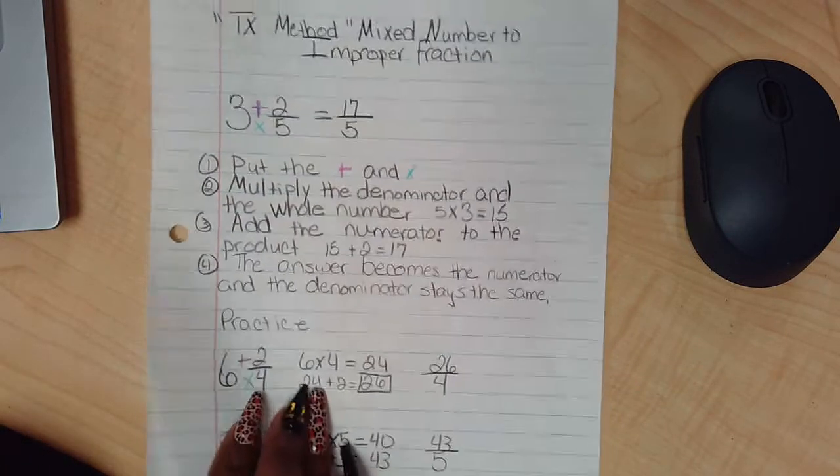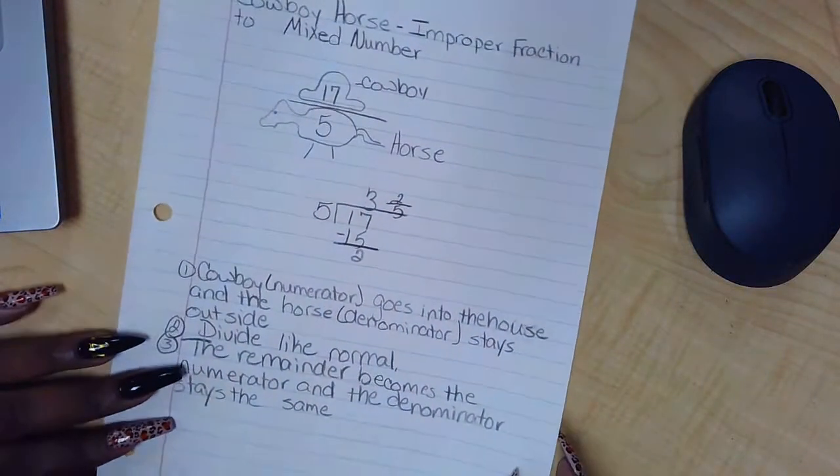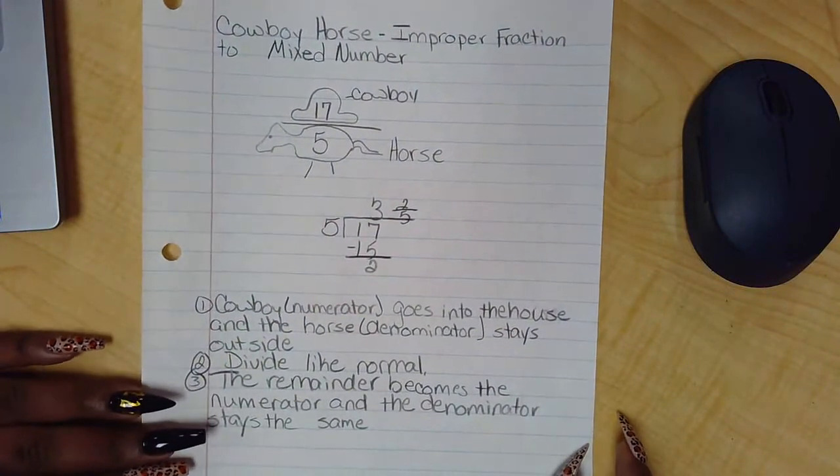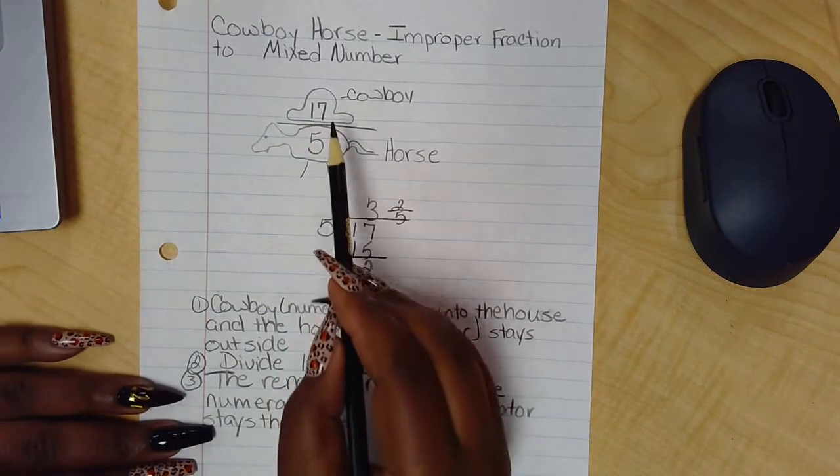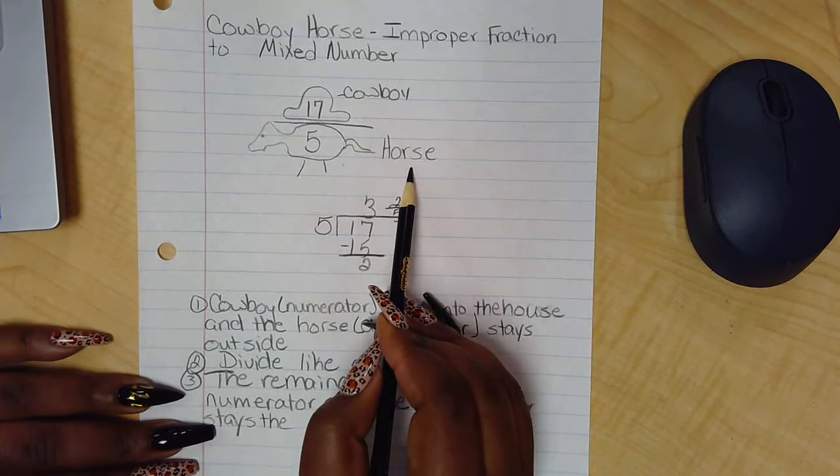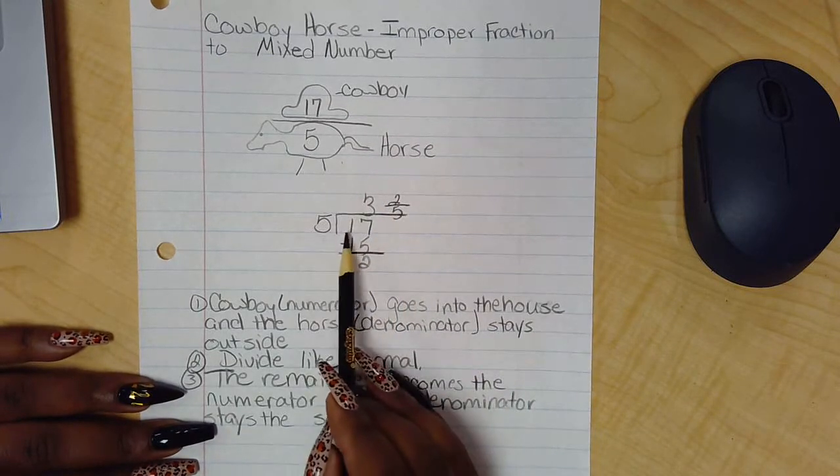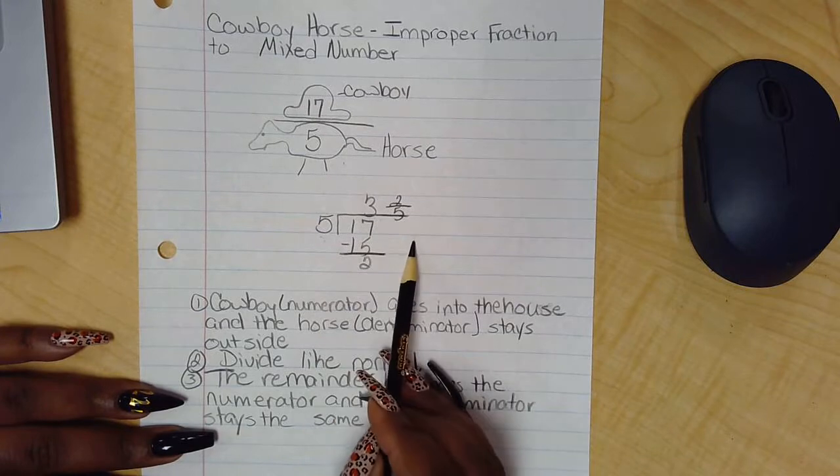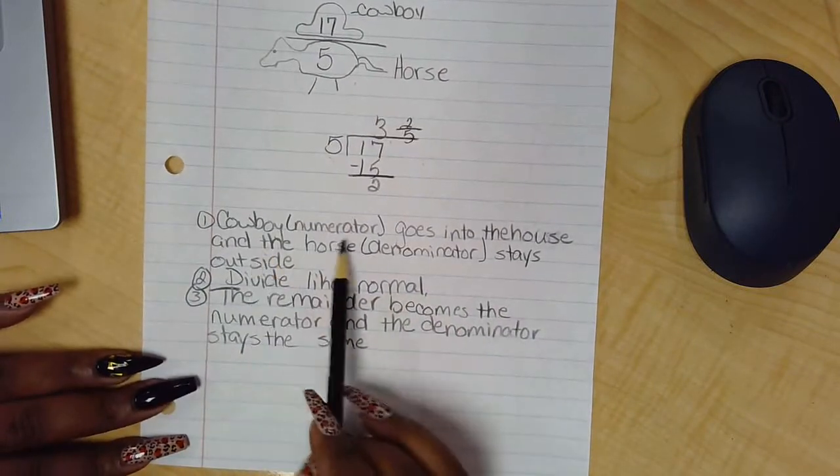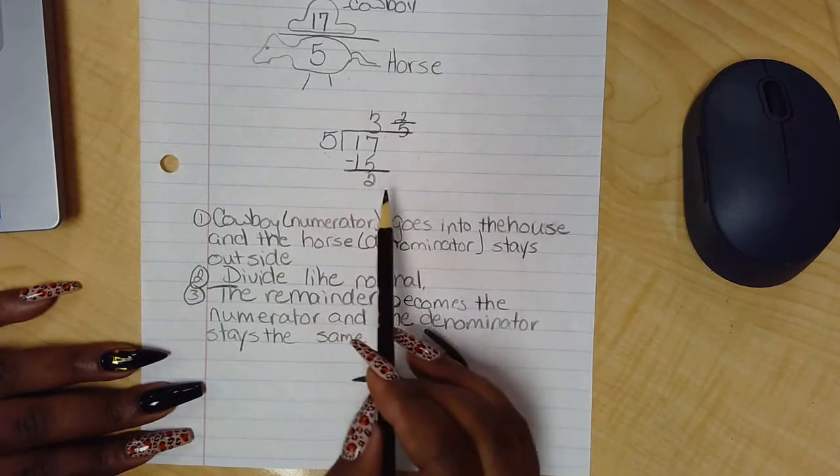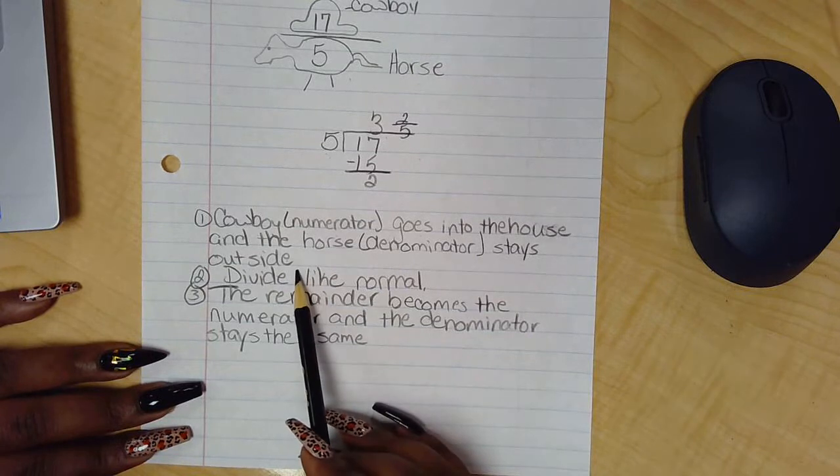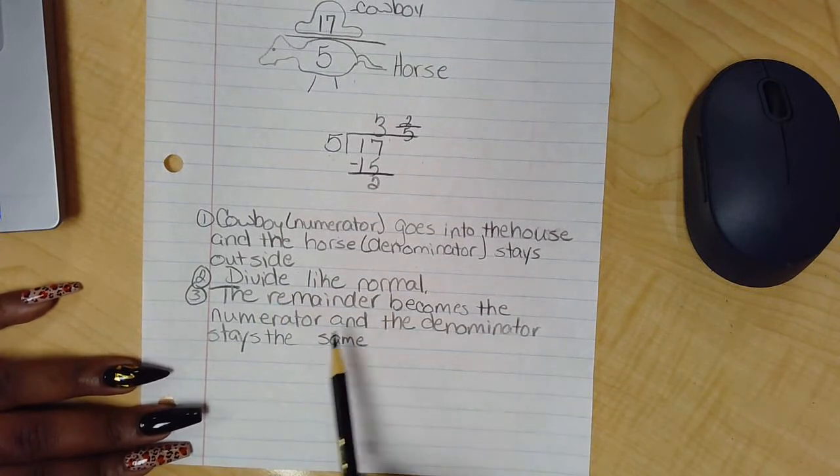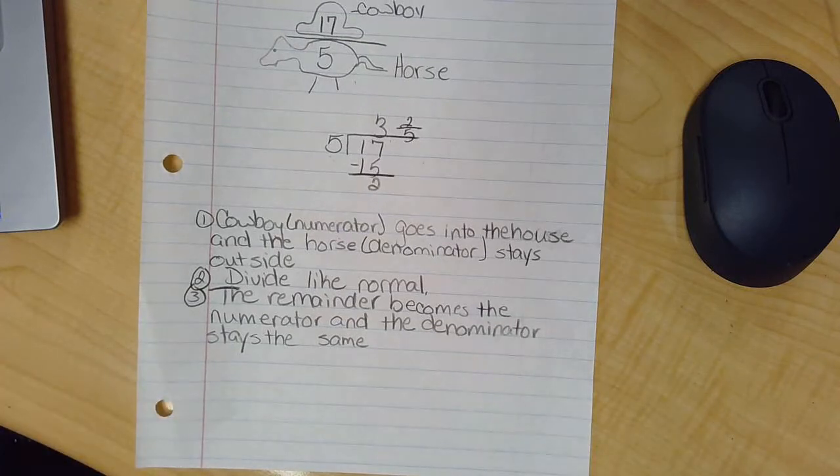Okay, now let's look at how to turn an improper fraction into a mixed number. We're going to call this the cowboy horse method. The cowboy is your numerator, the horse is your denominator. You like my drawing? I think it's cute. So this is how you do 17 divided by 5, and I get 3 and 2/5. Here's the strategy: your cowboy, the numerator, goes into the house. You remember I call this the house in long division. The horse, the denominator, stays outside. Now you divide like normal. The remainder becomes the numerator and the denominator stays the same.